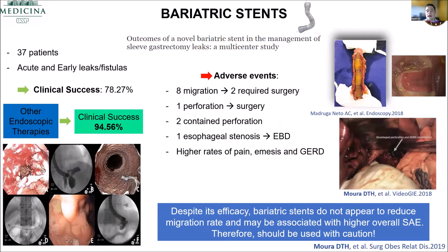Bariatric stents came as a promise to be the best approach for all patients, especially after sleeve gastrectomy. But our data — 37 patients in a multi-center study — showed clinical success close to the conventional stents, around 70-80%. However, adverse event rates were extremely high, especially when placed in the post-pyloric position. There is a lot of migration, and we didn't see any benefit compared to other stents. Be careful when you use this kind of stent.